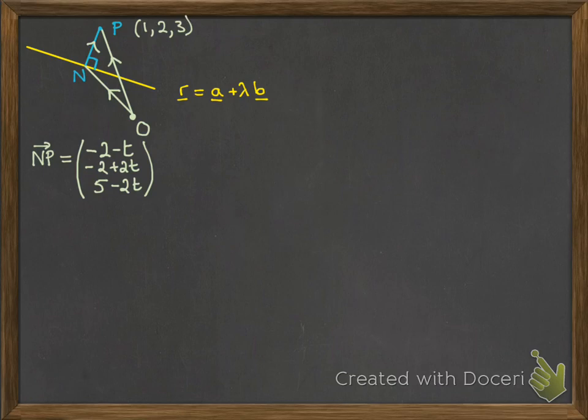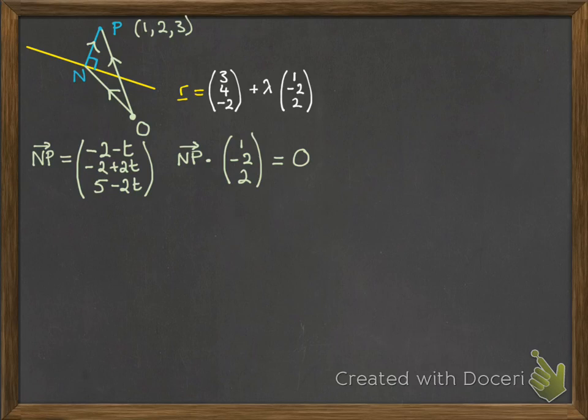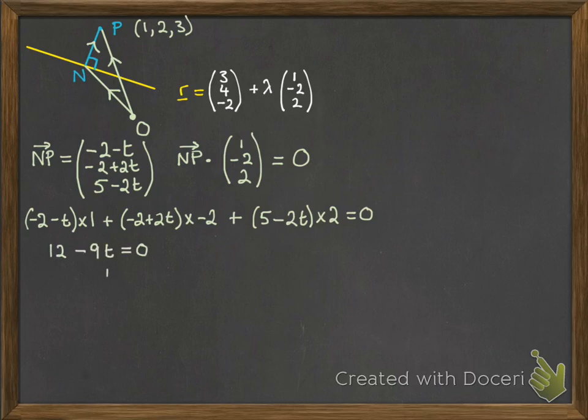So we have NP in terms of T. We have the equation of our line. And we know that the scalar product, when things are perpendicular, will equal 0. Now the perpendicular parts on this diagram are the vector NP and the direction of that line R. So we're only interested in the (1, -2, 2) part of that equation. That's the bit that will give us the scalar product equal to 0. Once we know that, we can use the scalar product to create an equation in terms of T and set it equal to 0. And now we can solve for T. So T is 4 thirds.